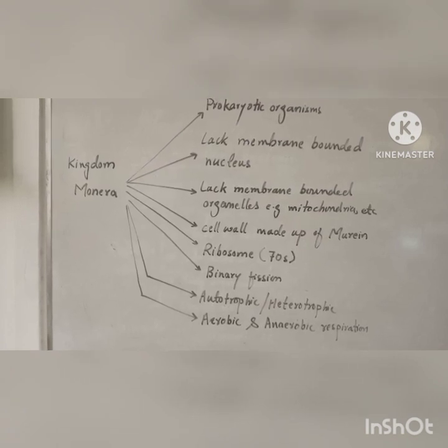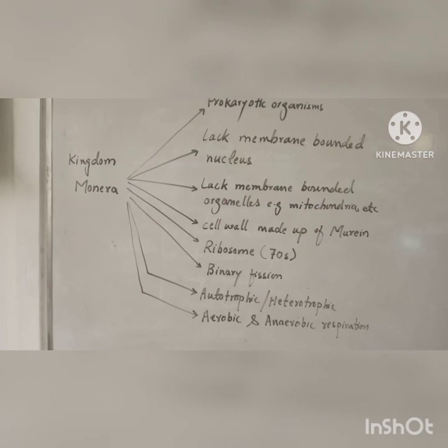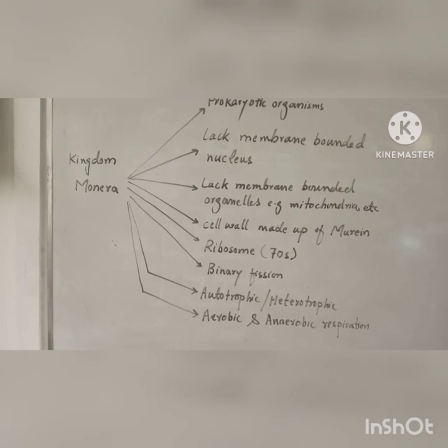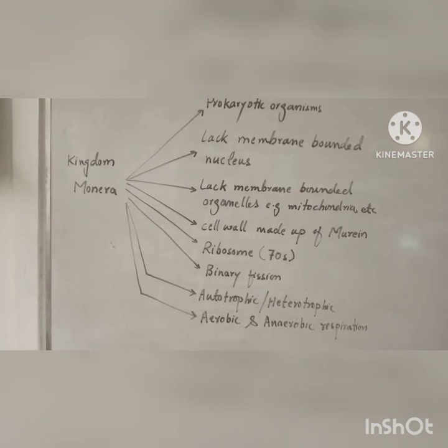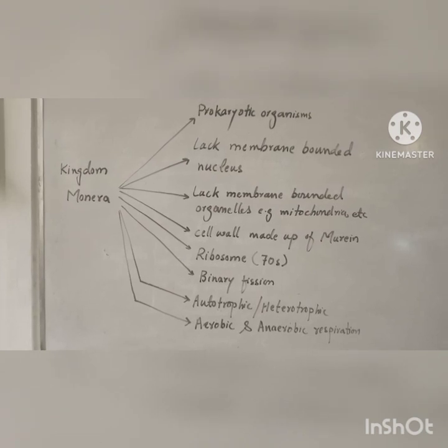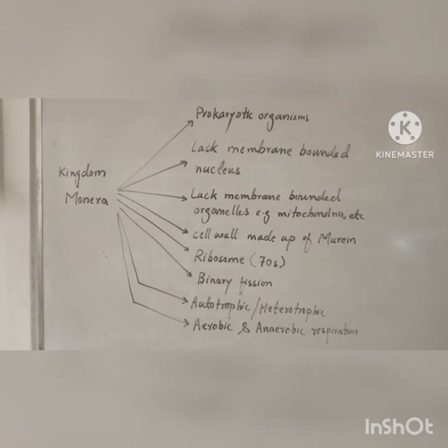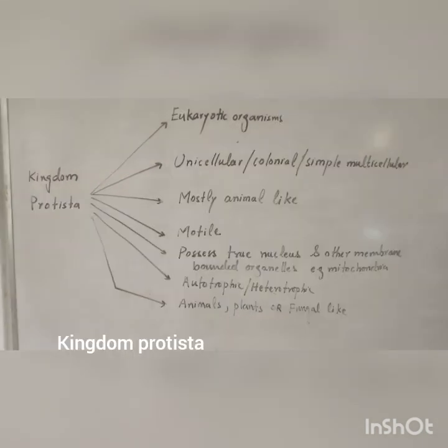Organisms in Kingdom Monera may be autotrophic or heterotrophic, and both aerobic and anaerobic respiration takes place in these organisms.